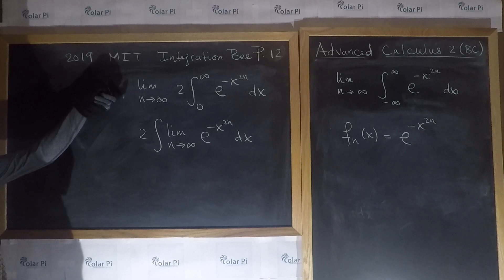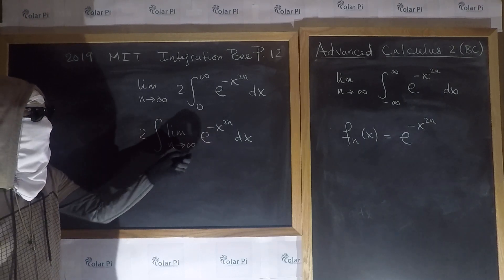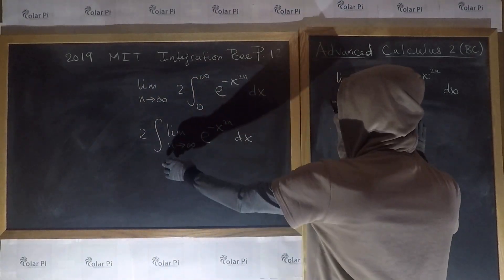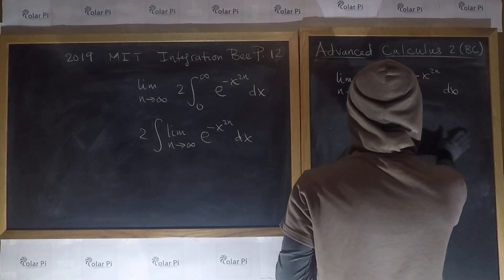So here, we go from this to this. And then next, we look at this limit here. Okay, so for this limit here, let's consider two cases.